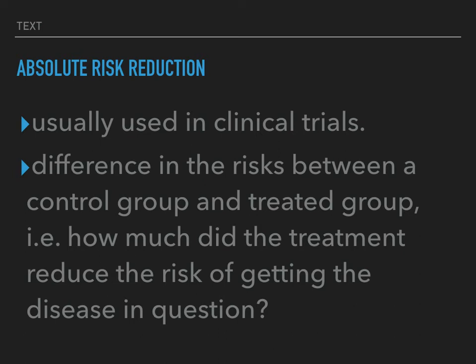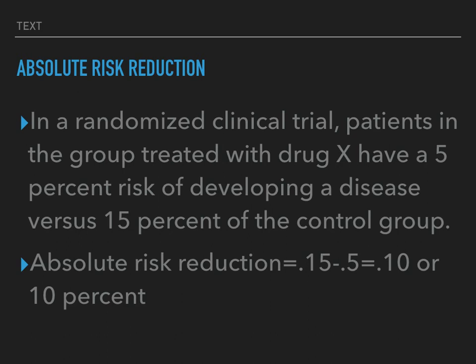As for absolute risk reduction, we usually use that in clinical trials. It's the difference in risks between a control group and a treated group. For example, a question that can be answered by this is: how much did the treatment reduce the risk of getting the disease in question? You are always comparing the risks between a treatment group and a control group, because in the control group you're just letting things be.